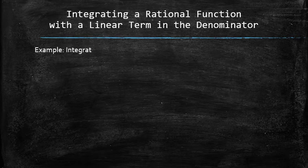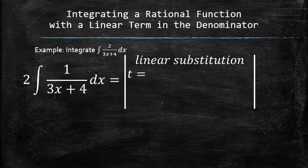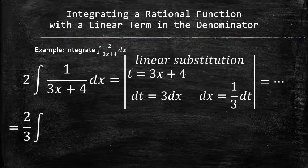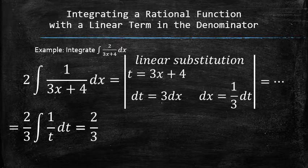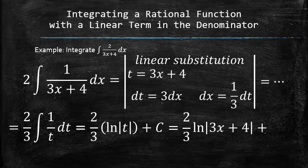Let's do an example. We factor out 2 right away and set up the linear substitution by setting t equal to 3x plus 4, finding the differential of t, and expressing dx in terms of dt. As a result, we have a simple indefinite integral in terms of t. We continue with the integration process by finding the antiderivative and replacing t with 3x plus 4.